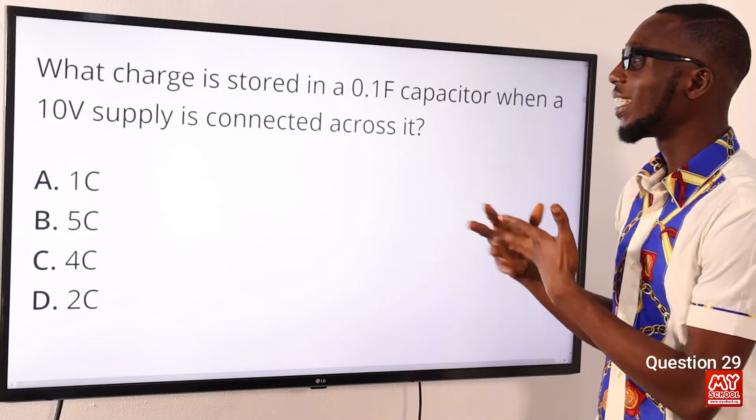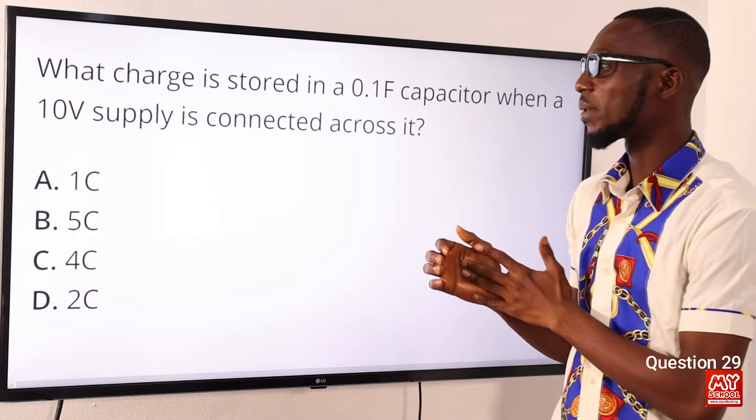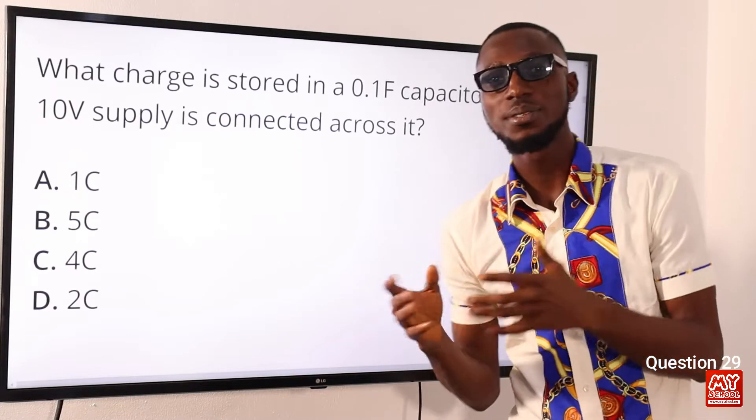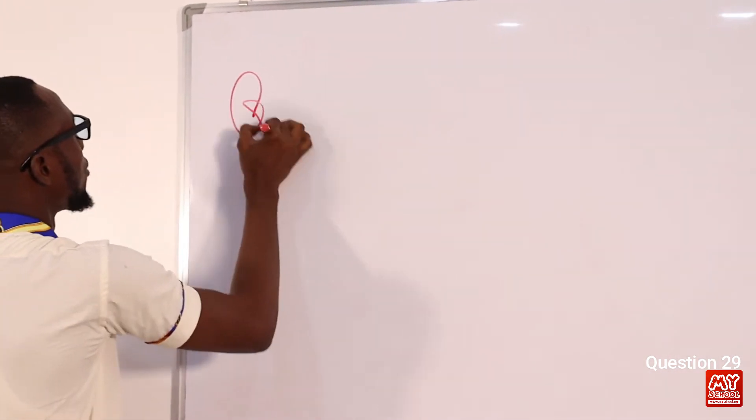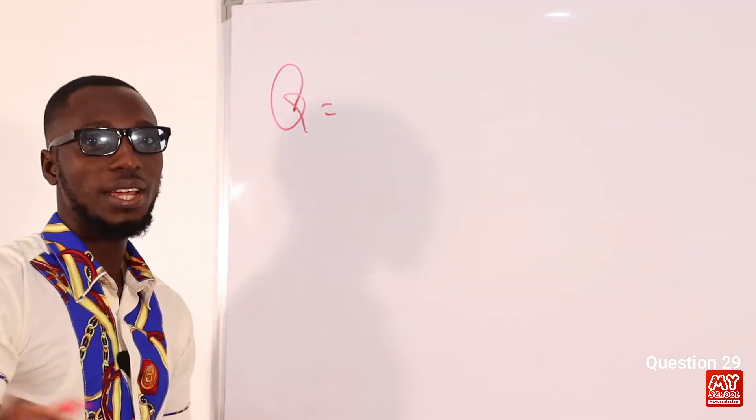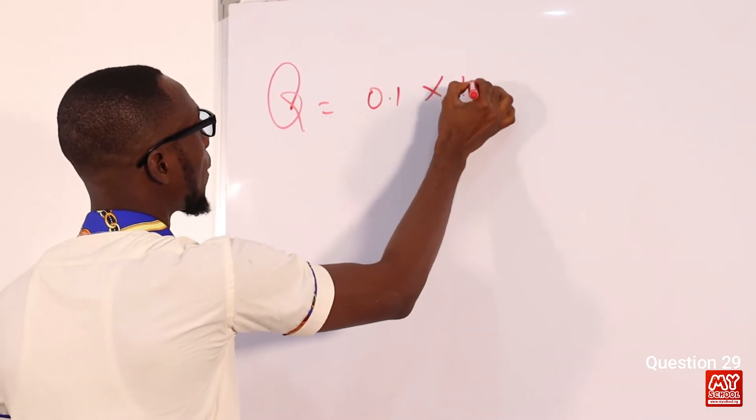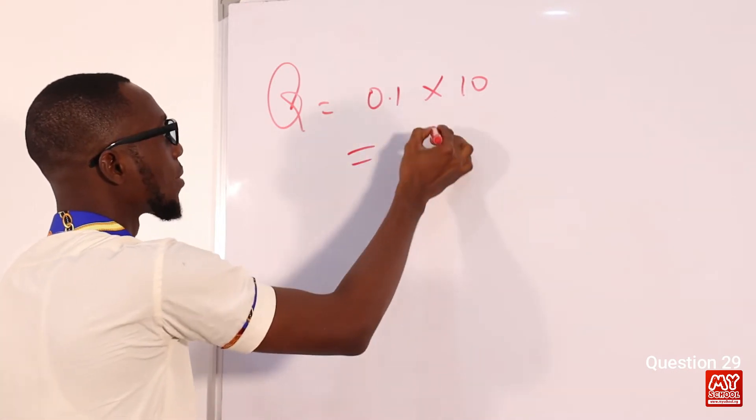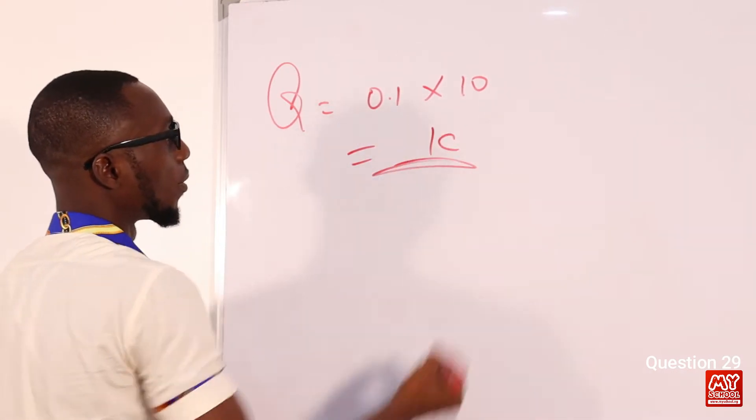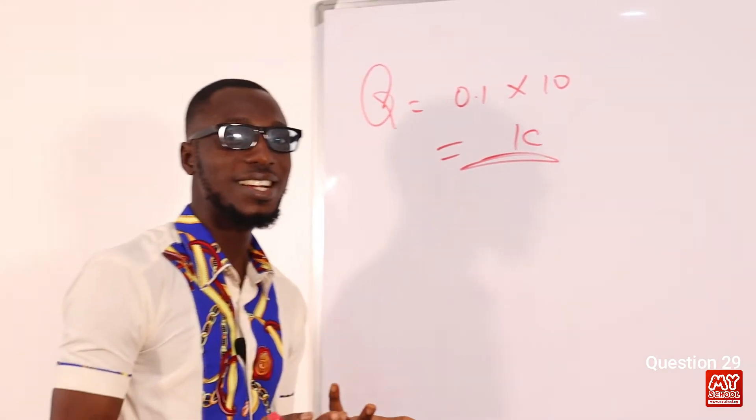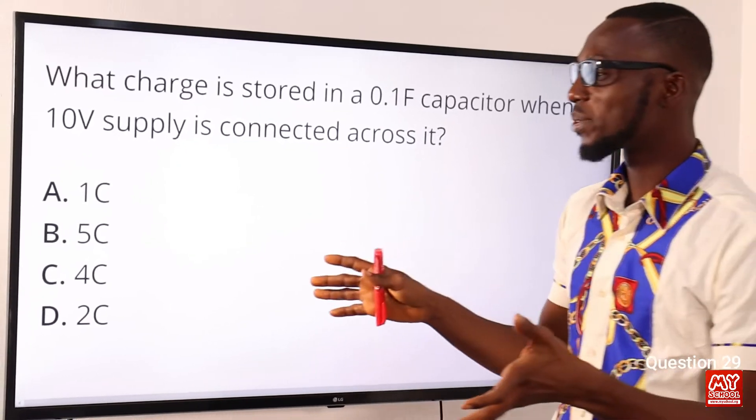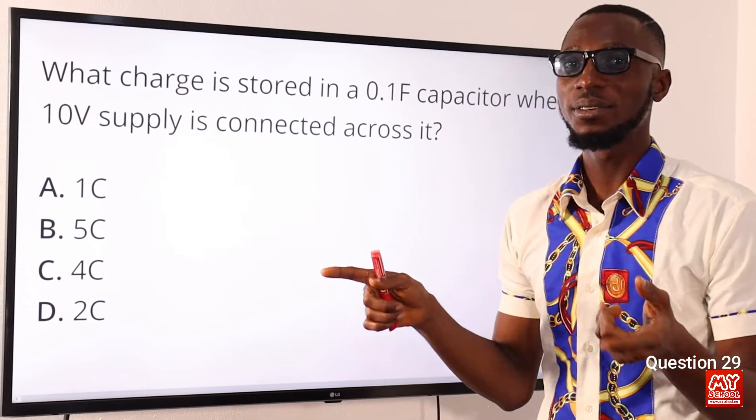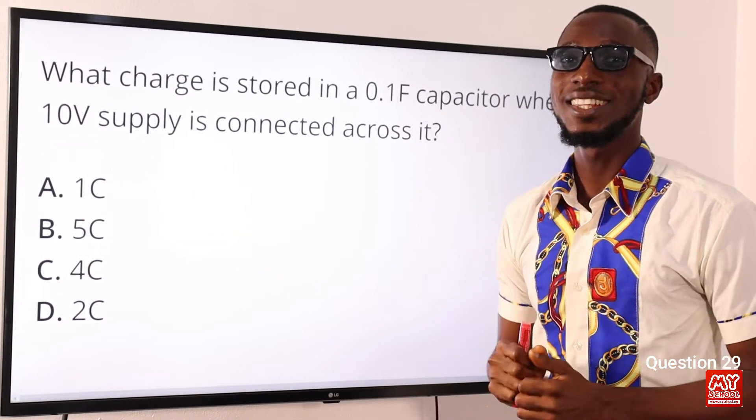What charge is stored in a 0.1 farad capacitor when a 10 volt supply is connected across it? So, we are just going to use the formula Q equals CV. Q, quantity of electric charge, equals C which is 0.1 times voltage supply which is 10. So, 0.1 times 10 is one coulomb of charge supply. Let's go back to the screen and see if we can find this value in any of the options provided. You will find that value in option A. So, option A is the correct option.